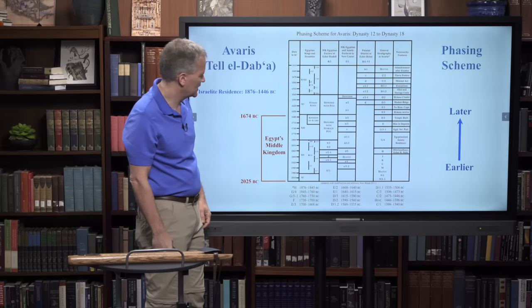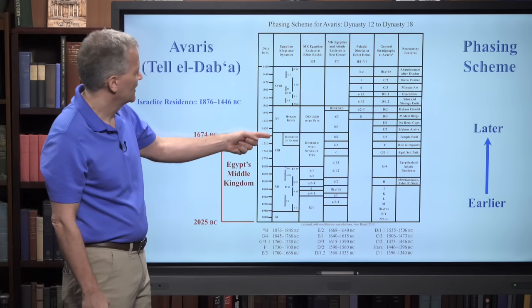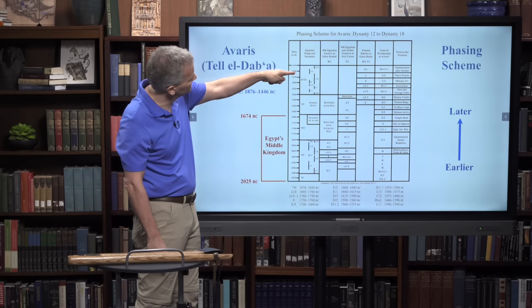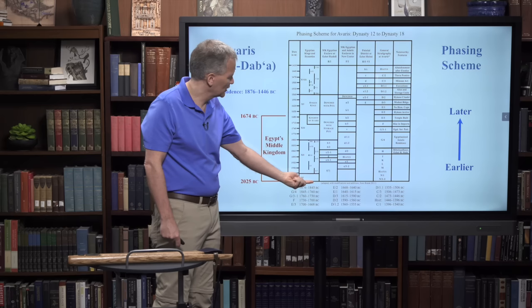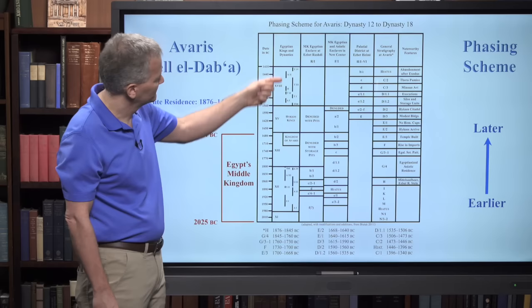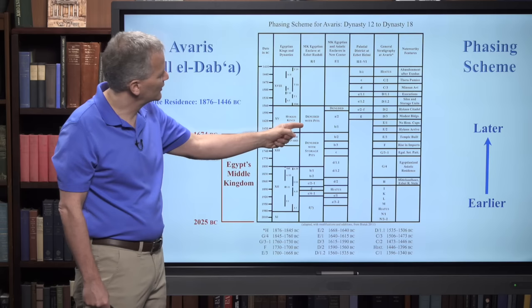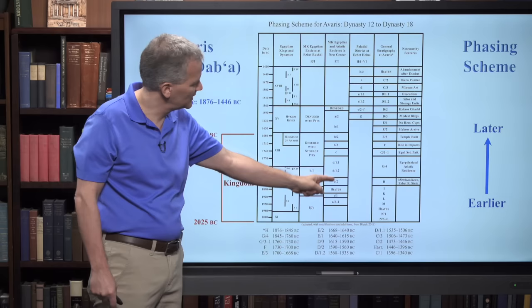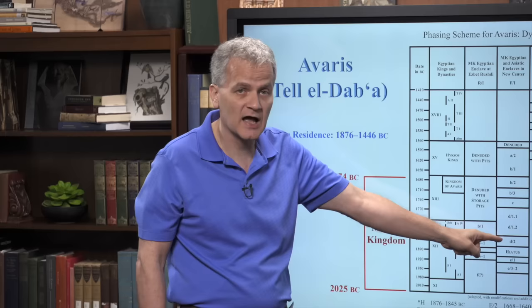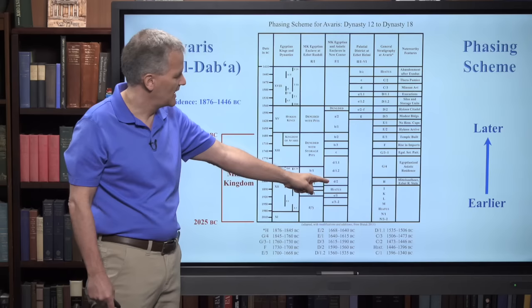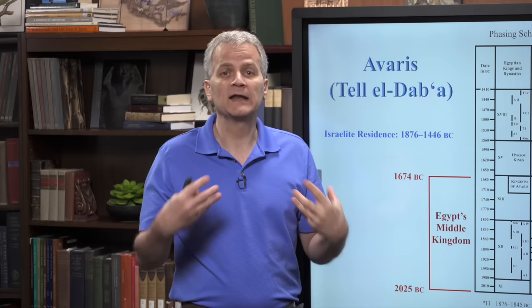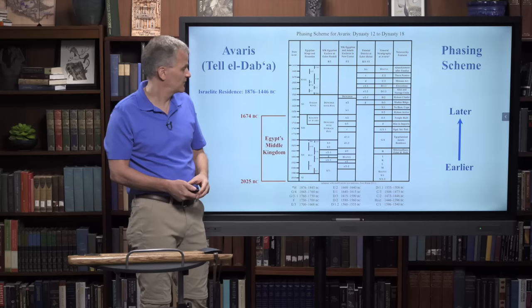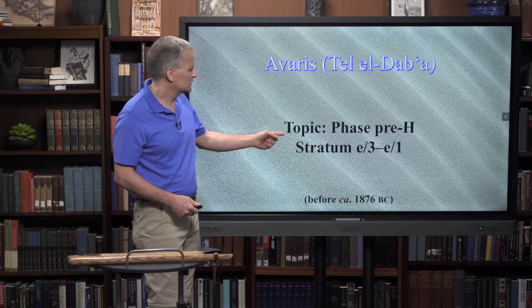They go all the way until about 1446 BC, when the Israelites left - they departed. This chart shows the dates column, the Egyptian king or dynasty column, going from earlier to later as we go up. Area R1, where the temple was, has its strata in this column. Area F1, where the Israelites are centered, has all of its occupational phases here. Our focus mainly is on D2, the occupational phase when Jacob lived at the site, and then D1, when Ephraim and Manasseh - the two oldest sons of Joseph - were running things after the death of Jacob in 1859 BC.